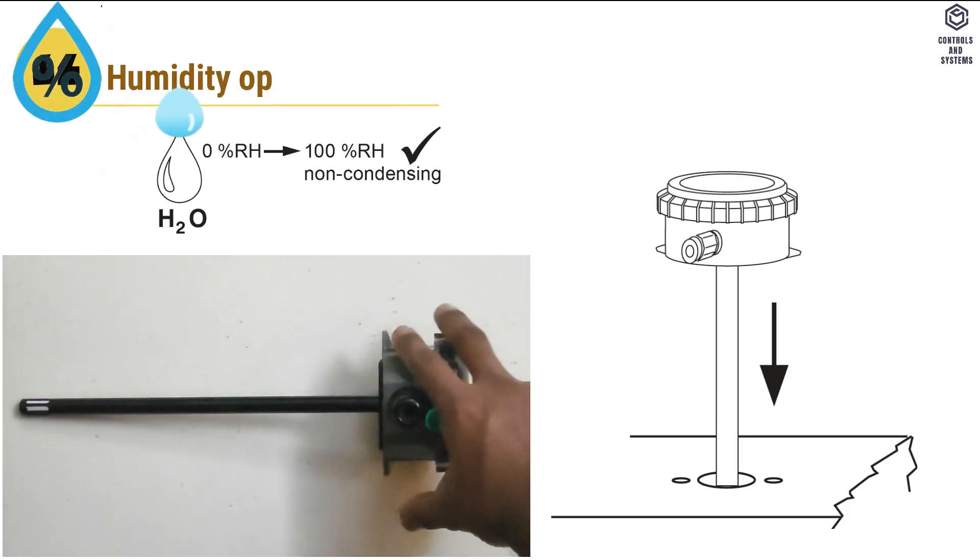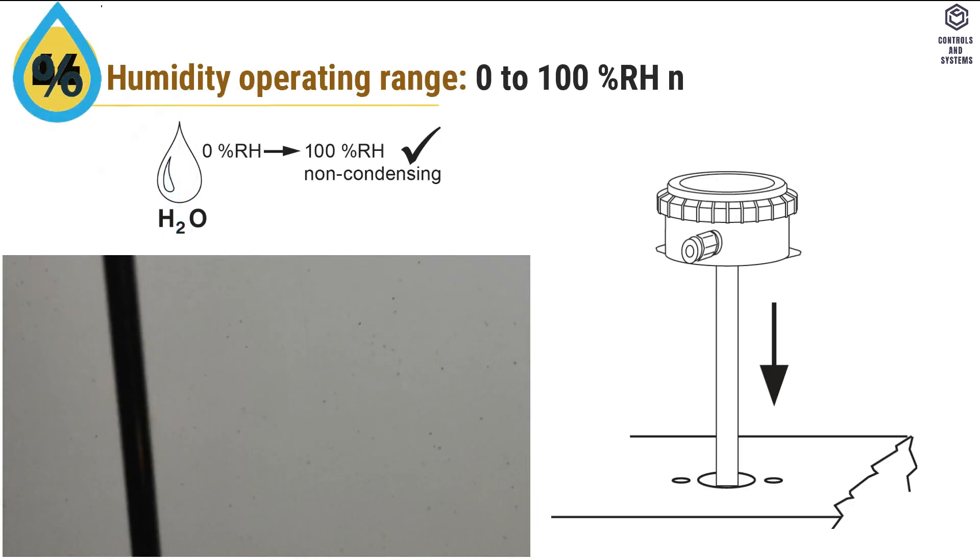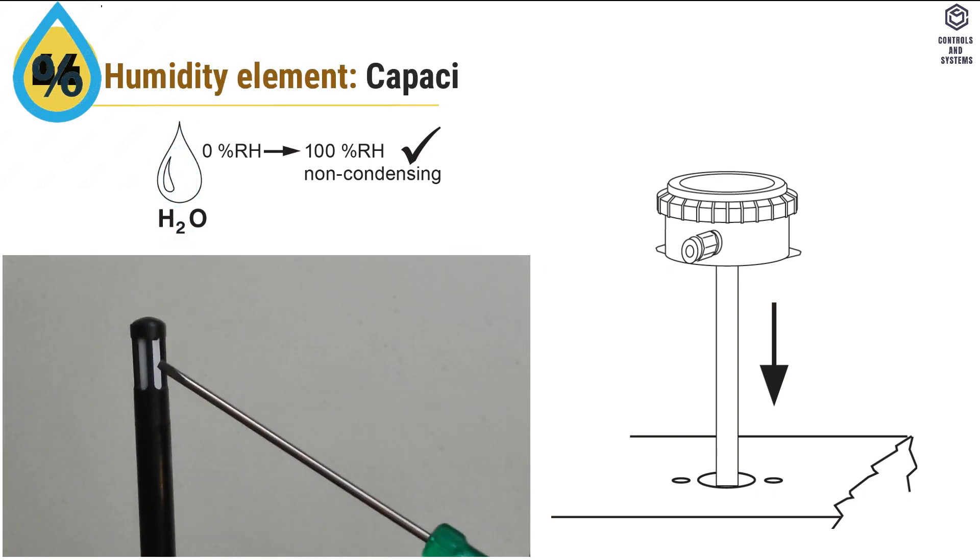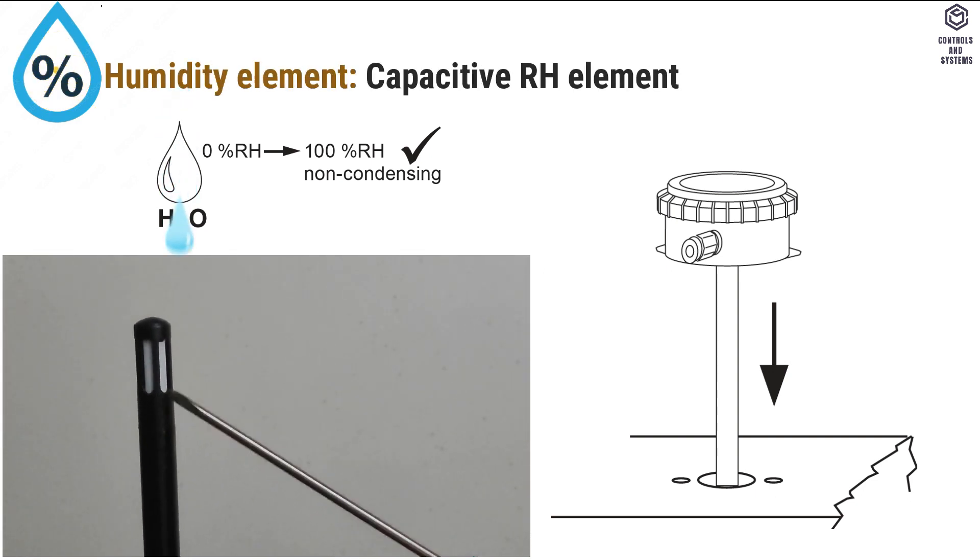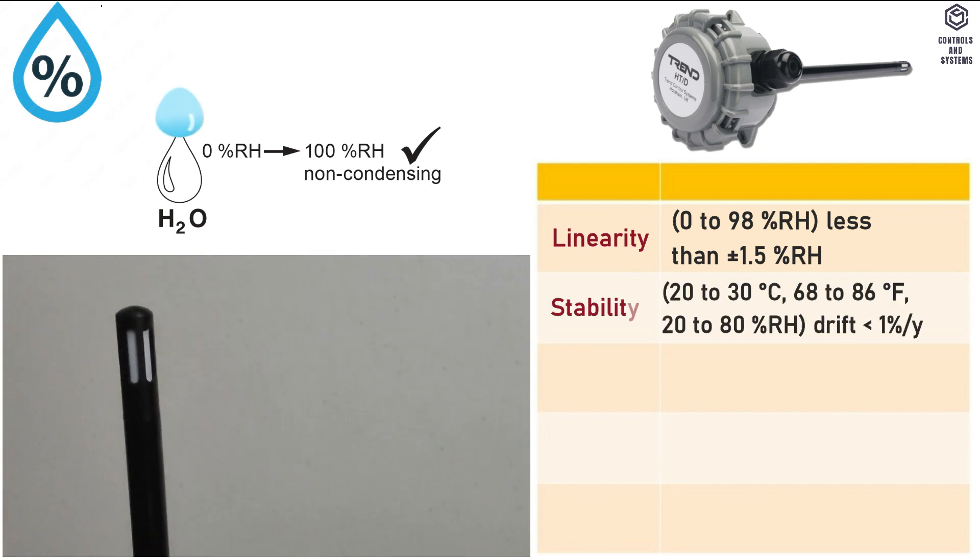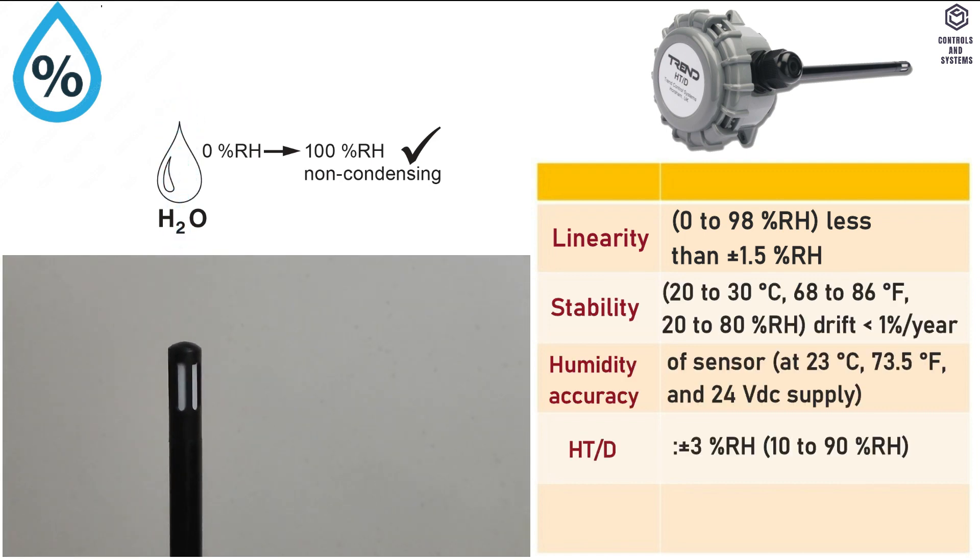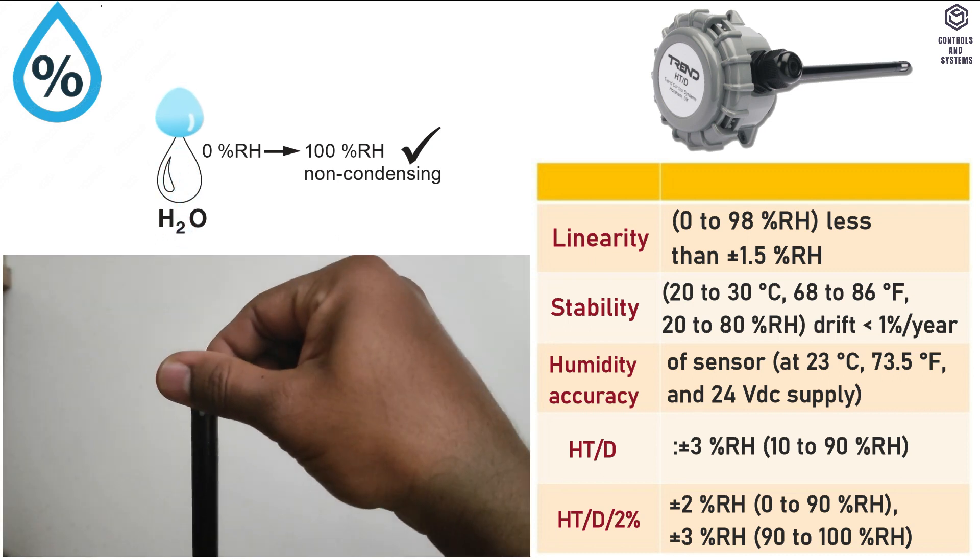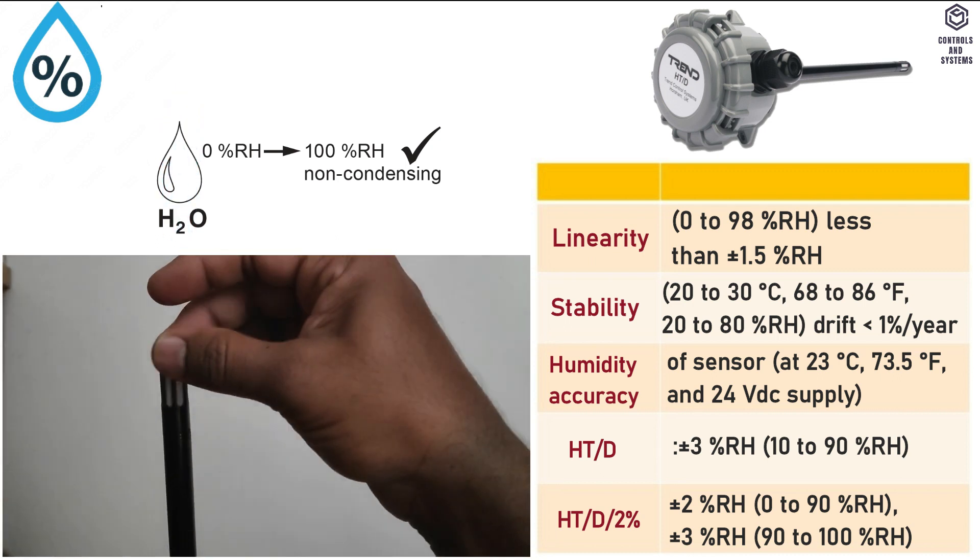Humidity: Humidity operating range is 0 to 100% RH non-condensing. Humidity element is capacitive RH element. Linearity, stability, humidity accuracy of HTD and HTD 2% sensor model ranges and specification are shown in the table column.